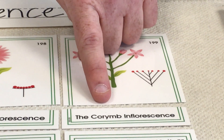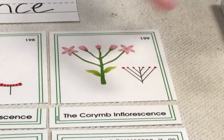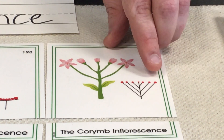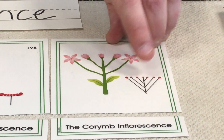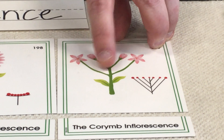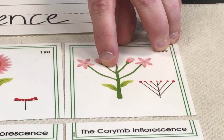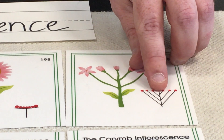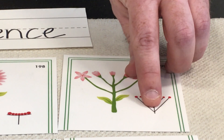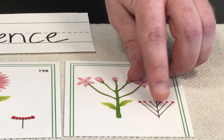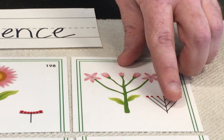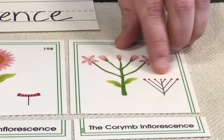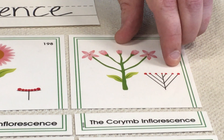Next, we have the corymb inflorescence. This is where it starts getting a little bit different. Notice there is one major peduncle still, but this is where you start getting pedicels attached. The pedicels are the smaller arms of the flower that attach to the side. This one has one major peduncle and many pedicels attached parallel to each other, attached at the same point — remember that term from your geometry. So the corymb inflorescence has one major peduncle and many pedicels attached to the side, and each pedicel has its own blossom or bud at the end of it.